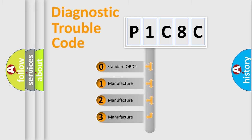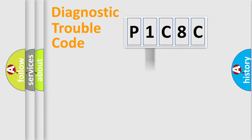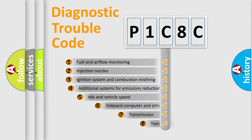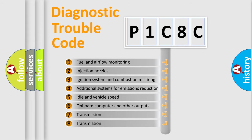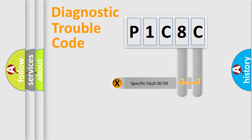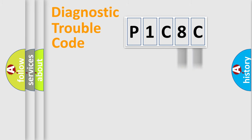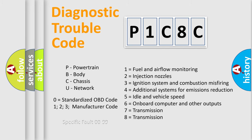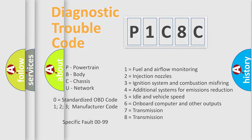If the second character is expressed as zero, it is a standardized error. In the case of numbers 1, 2, or 3, it is a more manufacturer-specific expression of a car-specific error. The third character specifies a subset of errors. This division is valid only for the standardized DTC code, where the last two characters define the specific fault of the group — but only if the second character is expressed by the number zero.